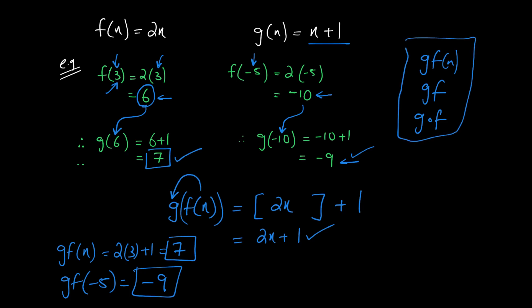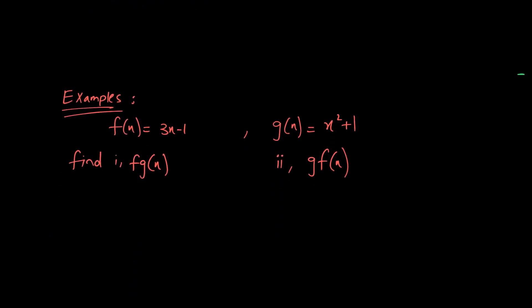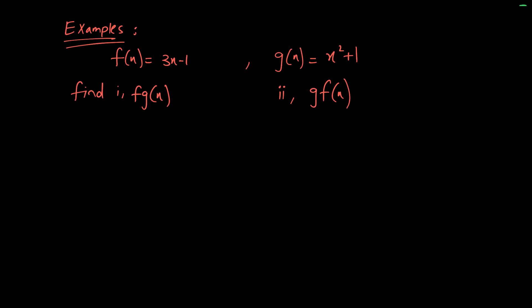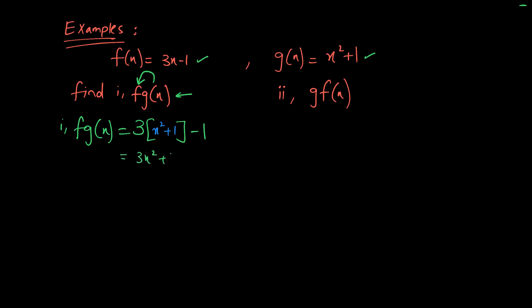Now let's look at a worked example. We are given f(x) = 3x² + 1 and g(x) = x² + 1. In the first part we are asked to form f∘g(x). This means we insert function g as the input to function f. Substituting g(x) = x² + 1 into f, we get 3(x² + 1)² — wait, simplifying gives 3x² + 3 - 1, which equals 3x² + 2. That is your function f∘g(x).